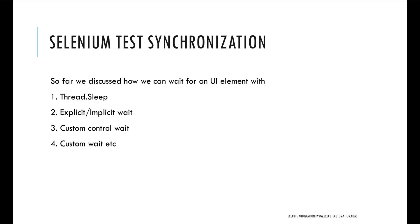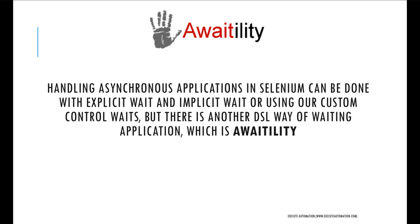So let's get started with Selenium test synchronization. So far we discussed how we can wait for an element with thread.sleep, explicit or implicit wait, custom control wait, and custom waited. We created our own custom waiting mechanism within our framework and saw how to wait for a particular control or any different input. We used all these different types of synchronization within our Selenium code and saw how they worked.